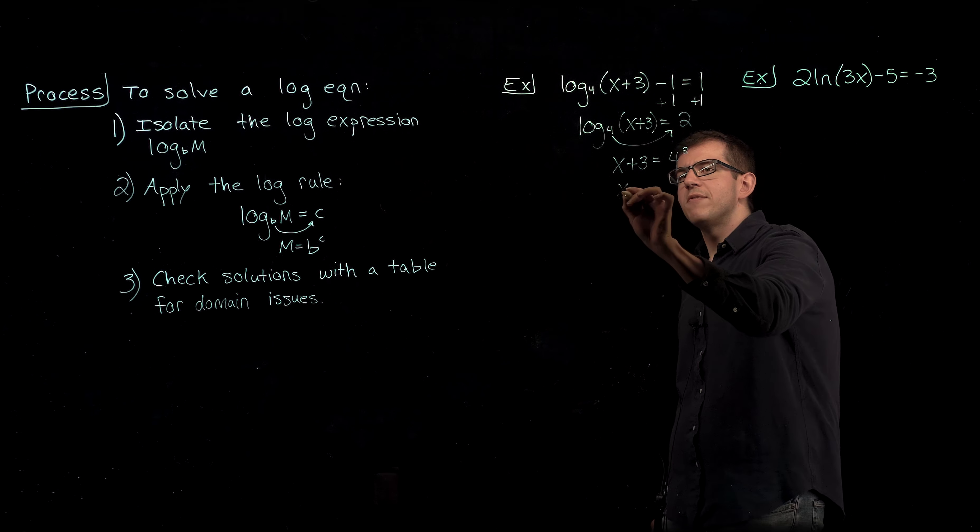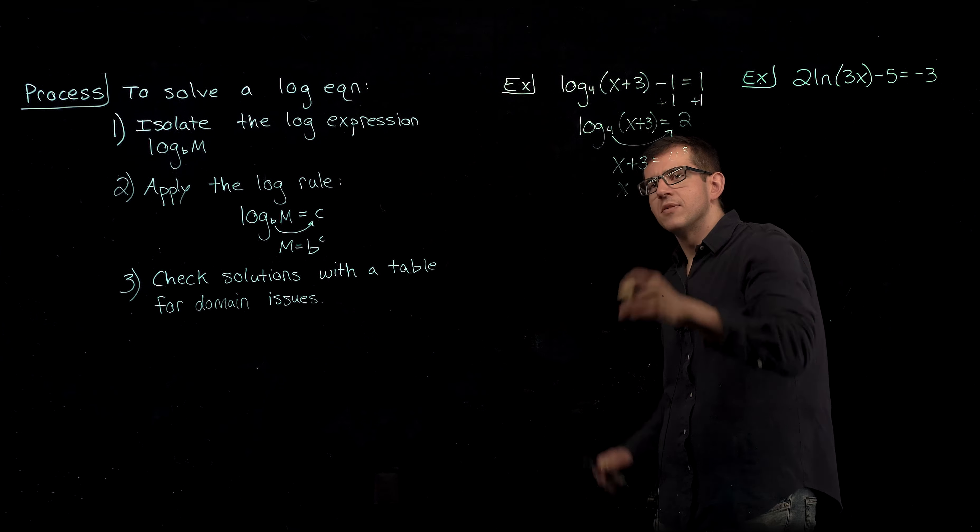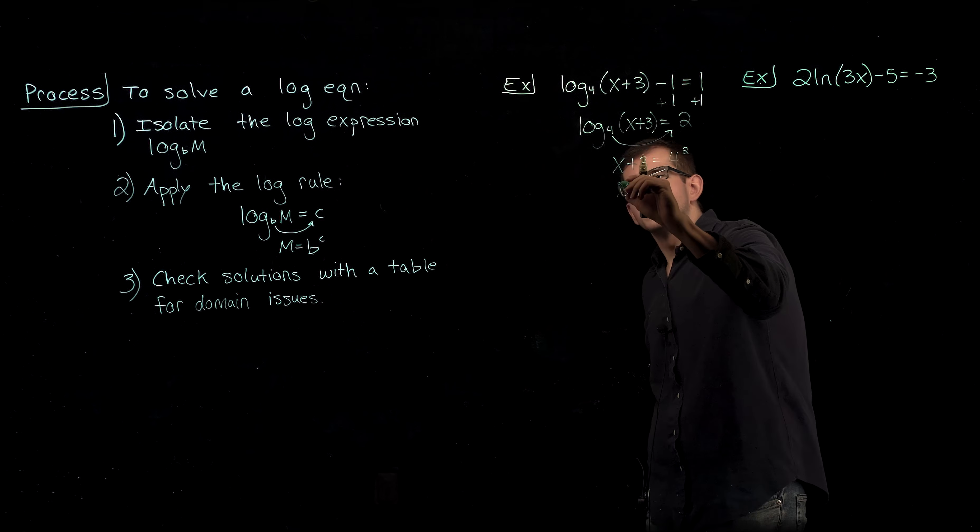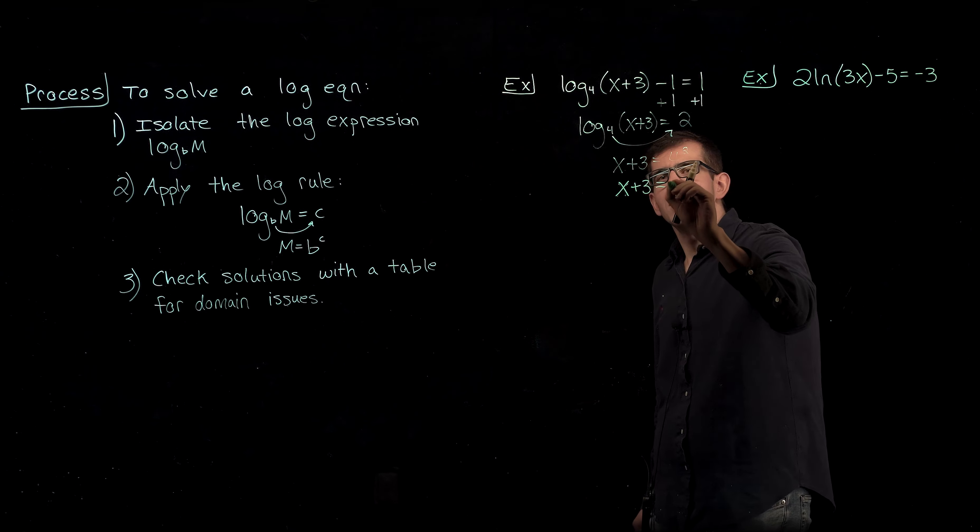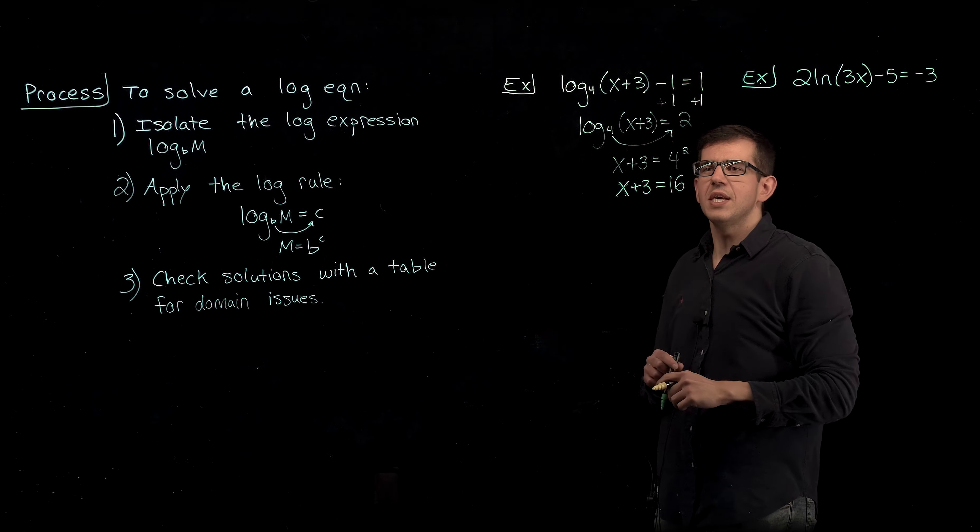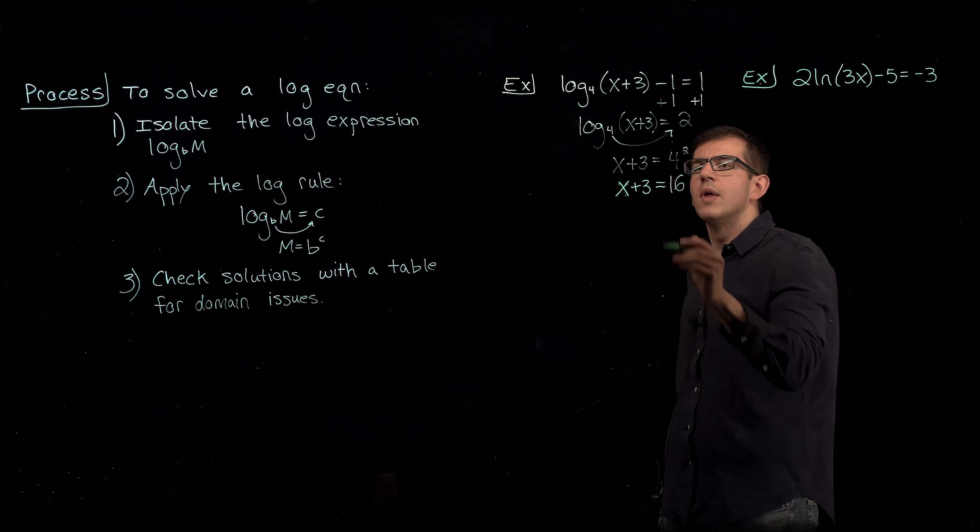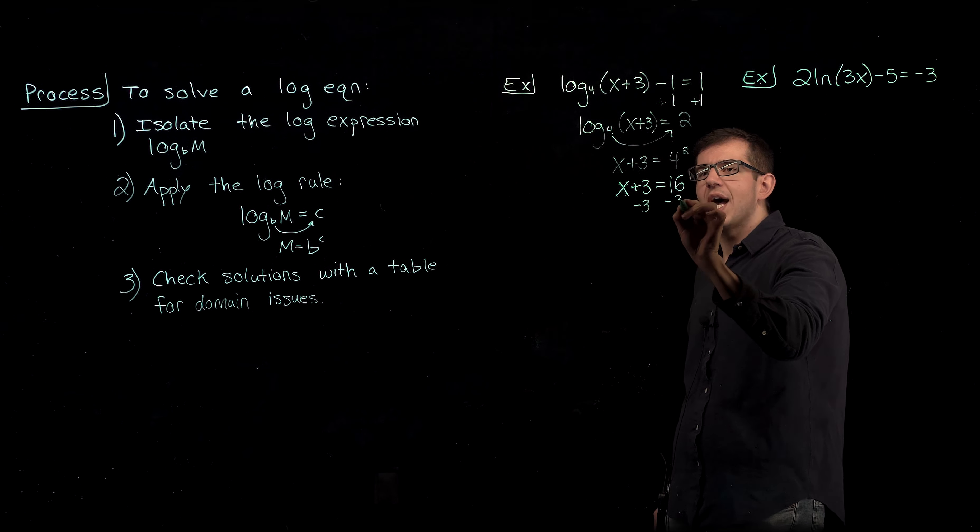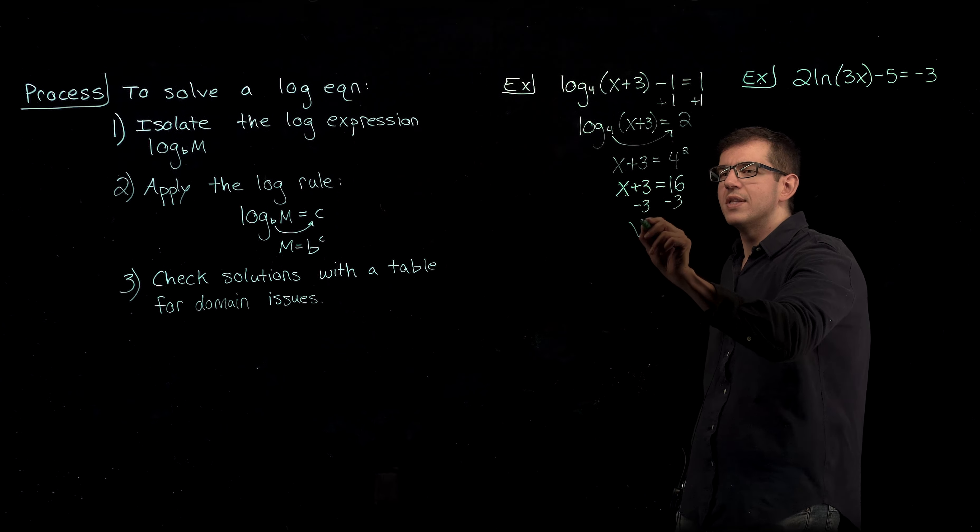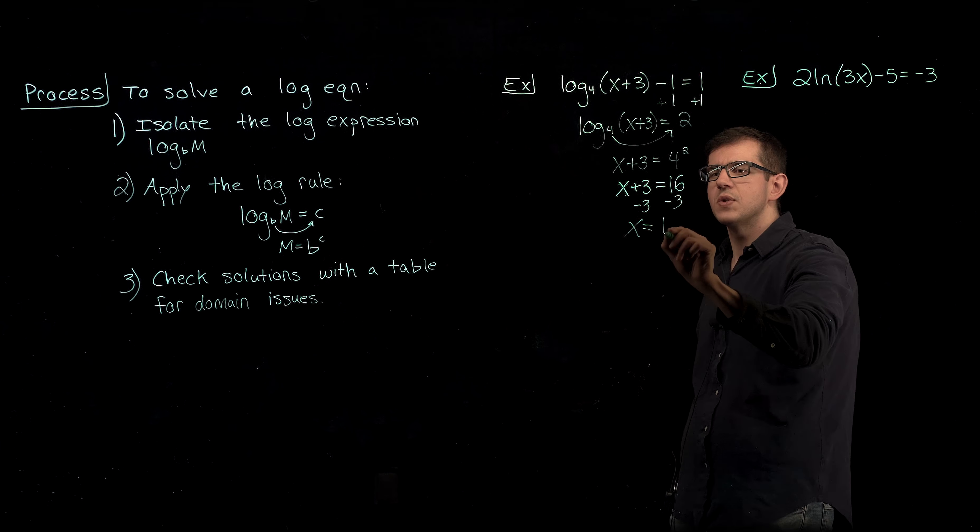which simplifies to give us x plus 3 equals 16. And now from here, we can subtract 3 from each side to get this x alone. That gives us x equals 13.